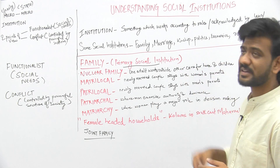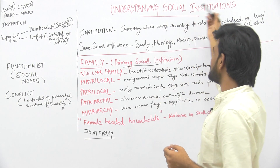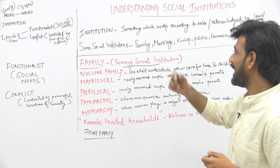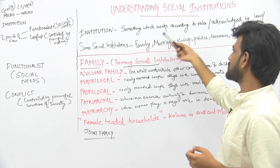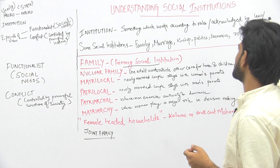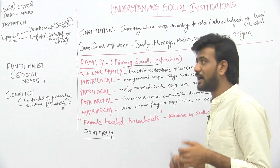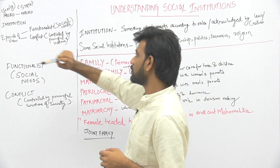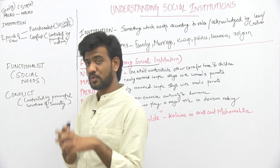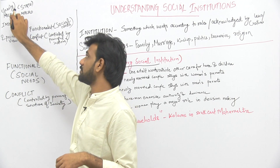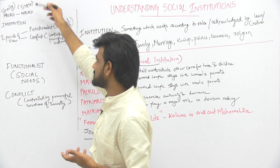Now we will do a revision. We have started the chapter on understanding social institutions. An institution is something which works according to rules, acknowledged by laws and customs. We have discussed two kinds of institutions: micro and macro. Micro is a small-scale institution, for example, family. Macro is a large-scale institution, for example, the state.